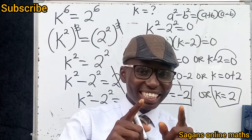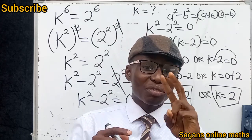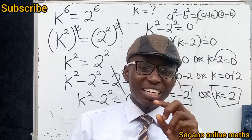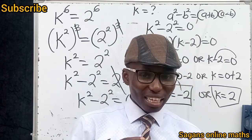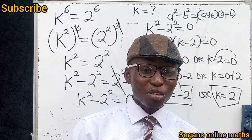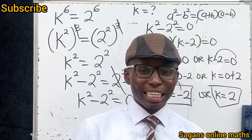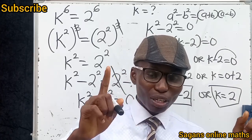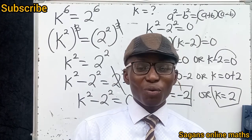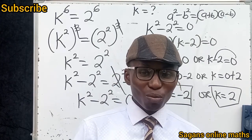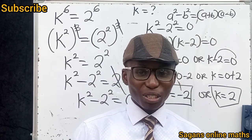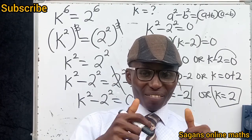You can see that k equals minus 2 or k equals 2 — that is the complete solution to this problem. You were only getting k = 2, but there are two solutions. Thank you so much for watching. Please like, comment, and share with loved ones. Thank you and God bless you.